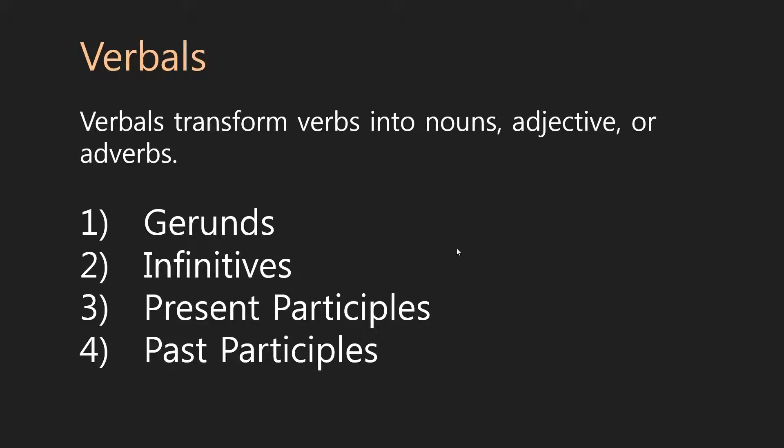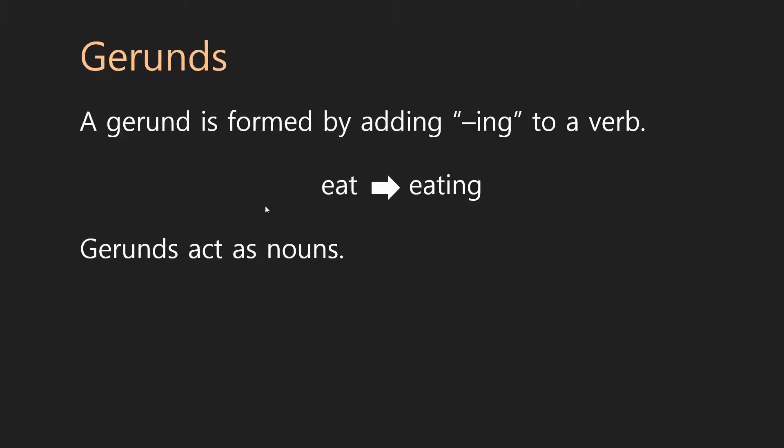So, let's begin with gerunds. Gerunds are probably the easiest ones to understand. Because the form is very simple. You simply add an ing to the end of a verb. So, for example, eat would become eating. Gerunds are also easy to understand because by adding the ing, you're simply turning the verb into a noun.